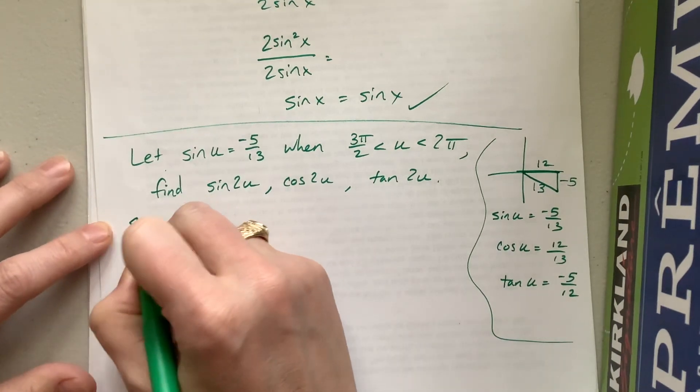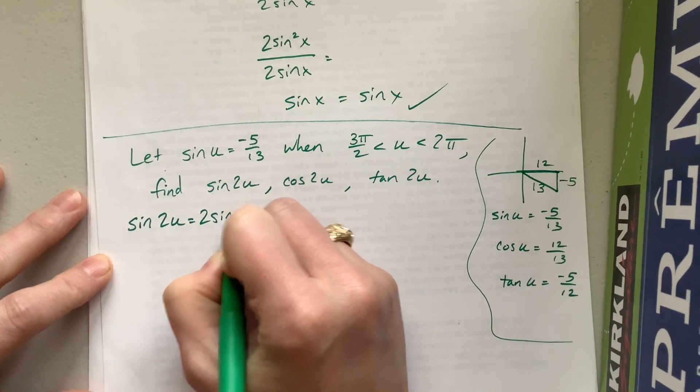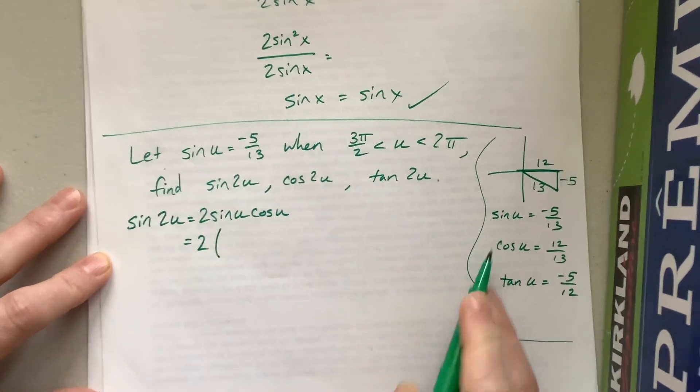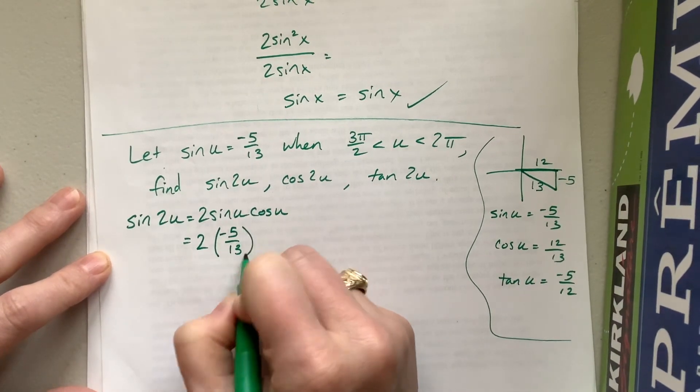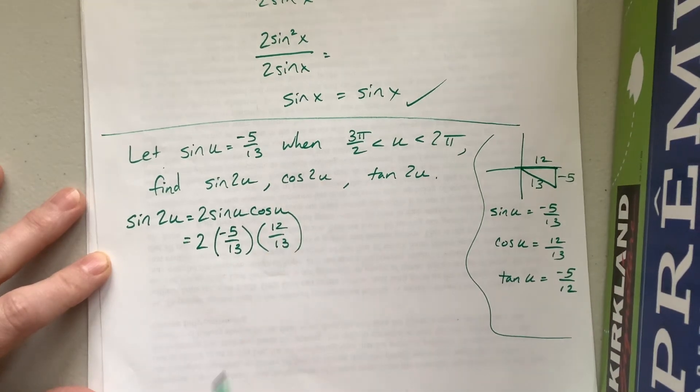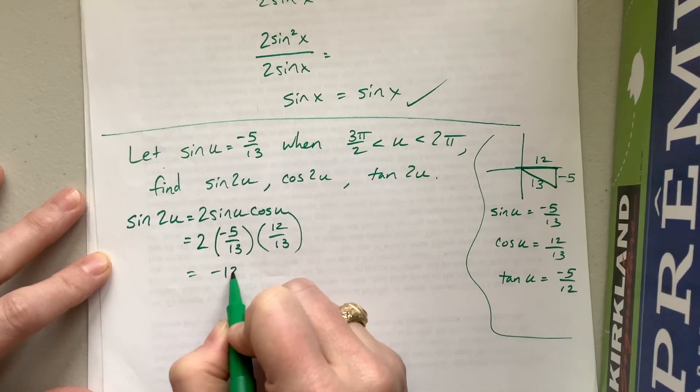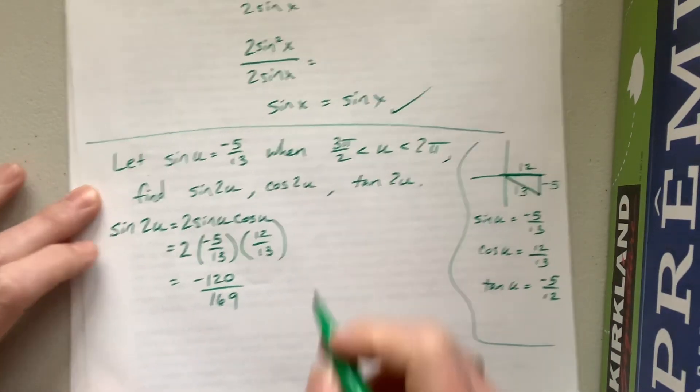This is my scratch work that helps me be successful in the rest of it. So now, sine of 2u. Well, sine of 2u is equal to 2 sine u cosine u, which is equal to 2 times negative 5 over 13 times 12 over 13. What's that? 10 times 12 is 120. It's negative 120 over 169.